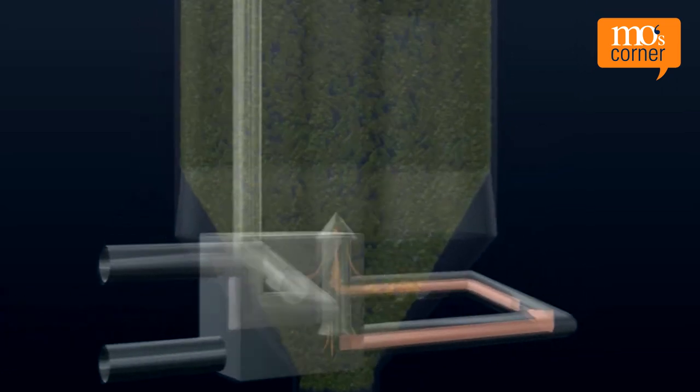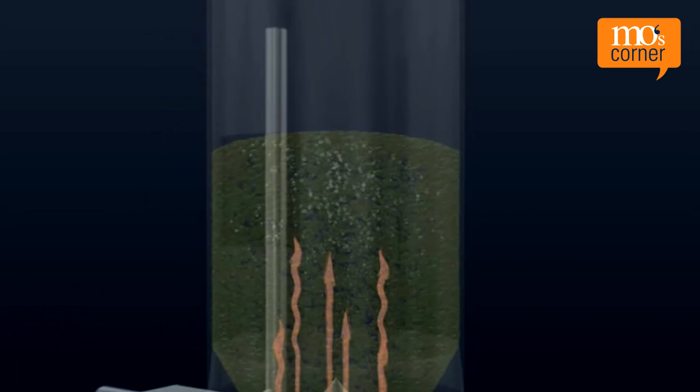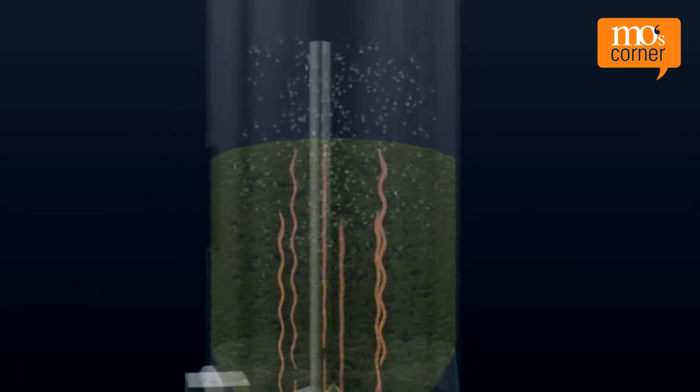The material throughput should be set so that the material reaches at least the required residual moisture on the way down from the top of the drying bin.